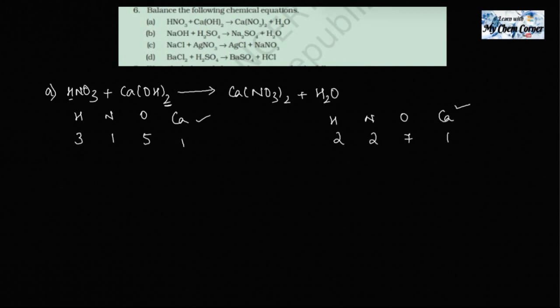On the right: three times two is six, plus one is seven. On the left, three plus two is five — that's an odd number. If we add two HNO₃ that gives three times two equals six, plus two equals eight on the left. On the right, if we change water to two molecules: three times two is six, plus two is eight. So oxygen on the right hand side is now balanced.